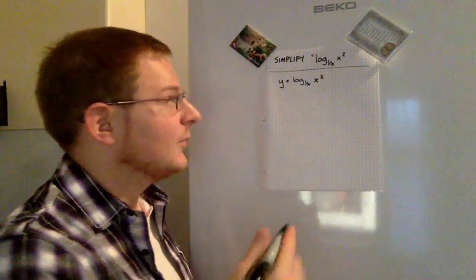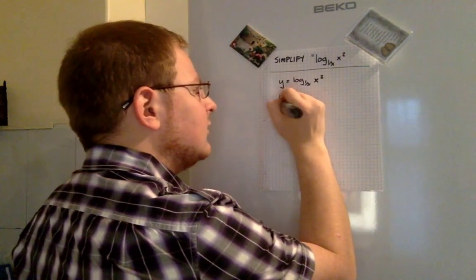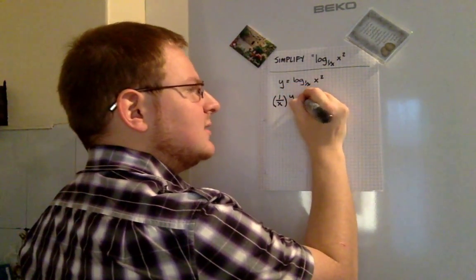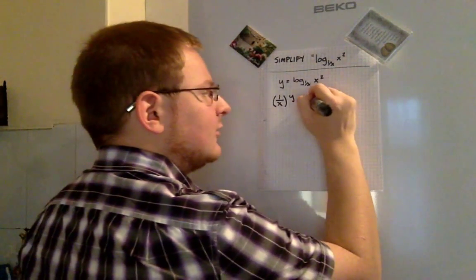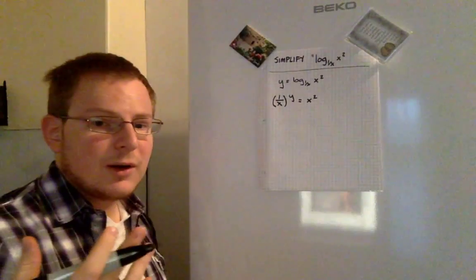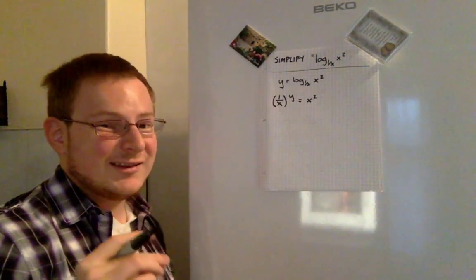The best way that I would know is just to go by the definition of a logarithm and write it this way instead: 1 over x to the power of y is equal to x squared. And then we can further rewrite this 1 over x in a different way just to make the thing insanely easy to solve.